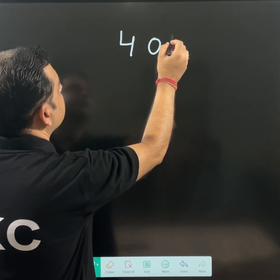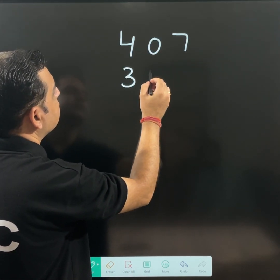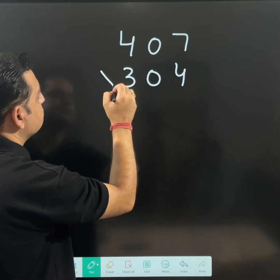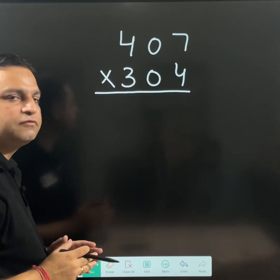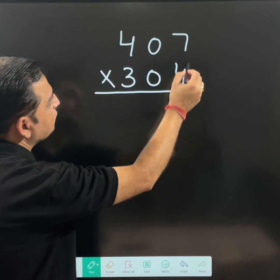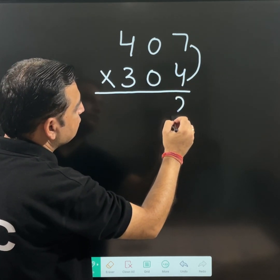Let us take another example. Let us suppose 407 is multiplied with 304. If you are multiplying it, 7 multiplied by 4 is 28.